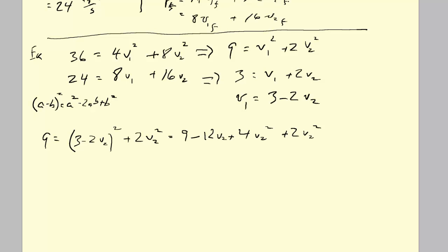This is going to be 3 squared is 9, minus that times that doubled, so 12 V2, and then plus that guy squared, so 4 V2 squared. That's the squared binomial, then we add 2 V2 squared. So we've got 9 equals 9 minus 12 V2 plus 6 V2 squared.